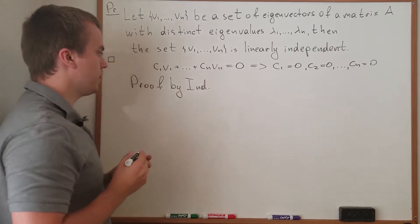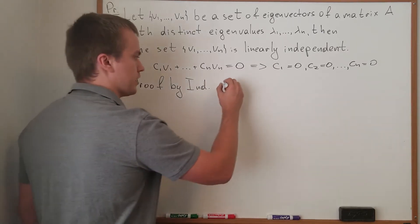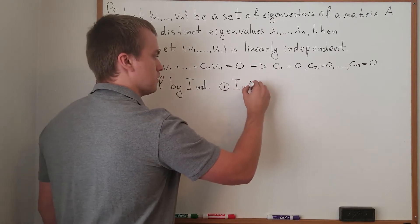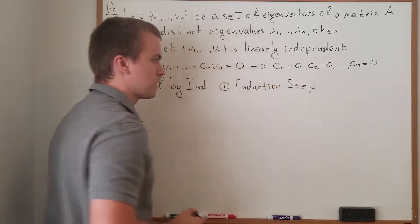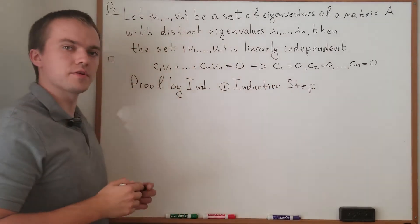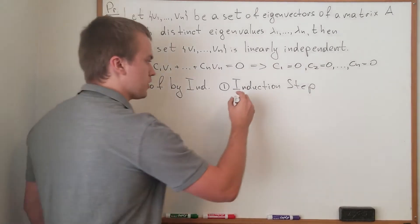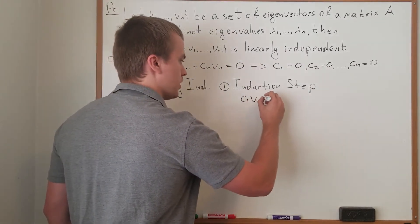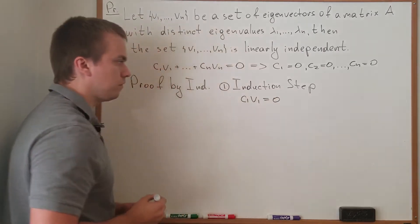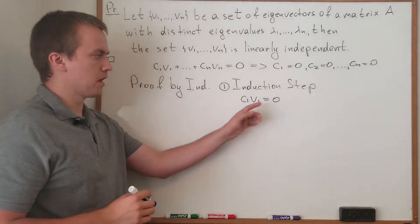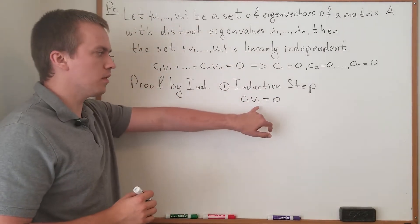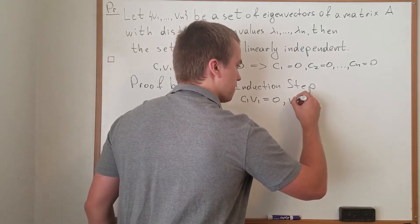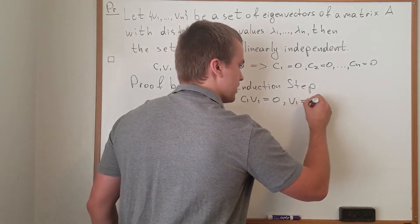For the induction base case, we assume we have just one vector, so c1·v1 = 0. What do we know about an eigenvector? We know that eigenvector v1 is not equal to zero.